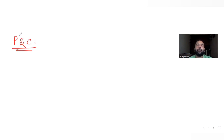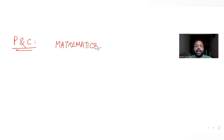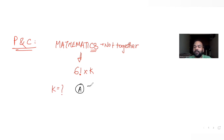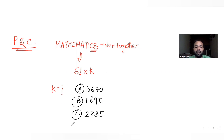Hi guys, I hope you are all doing well. Today's question is from the topic of permutations and combinations. The question tells us that the letters of the word MATHEMATICS are arranged with the condition that C and S are not together. The number of such arrangements is given as 6 factorial into K, and we need to find the value of K. The options given are: 5670, 1890, 2835, and 9.